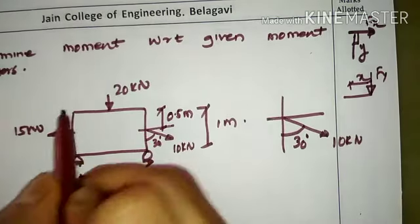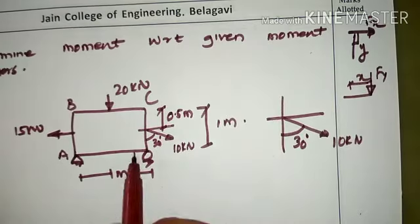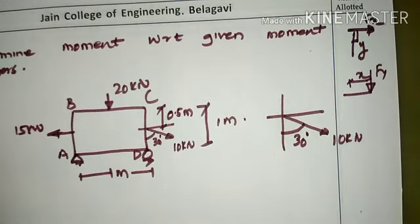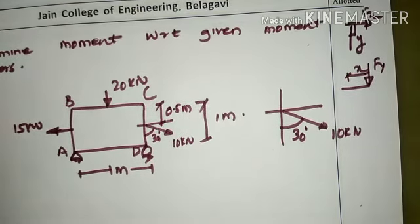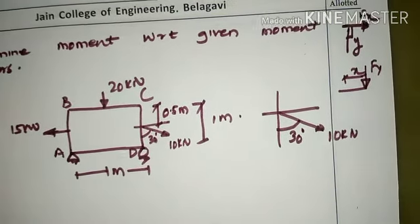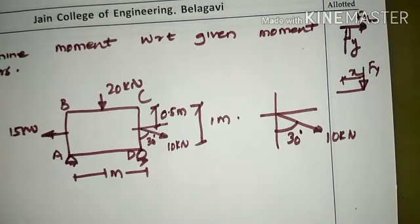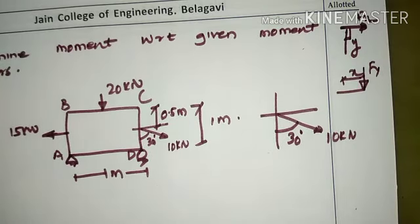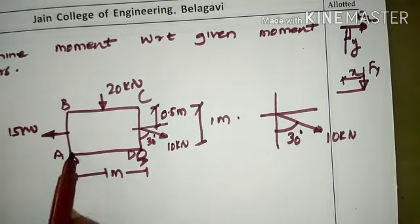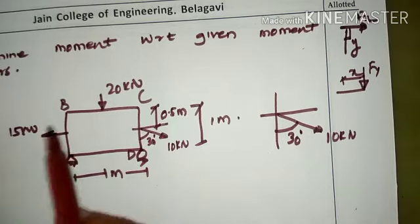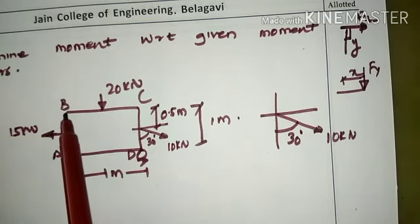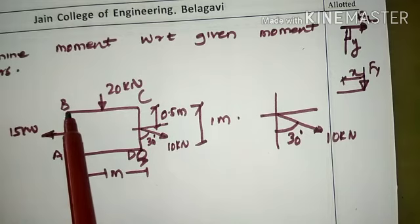Naming the prominent points on the grid as A, B, C, and D, we shall consider the moment with respect to various locations. As the moment center varies, the origin also varies. If A is the moment center, then A will be the origin. If B is the moment center, then B will be the origin, and the coordinate at that location will be 0,0.